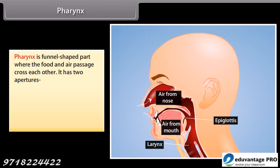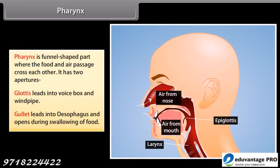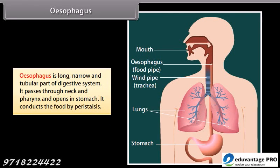The pharynx is a funnel-shaped part where the food and air passages cross each other. It has two apertures: the glottis, which leads into the voice box and windpipe, and the gullet, which leads into the esophagus and opens during swallowing of food. The esophagus is a long, narrow, tubular part of the digestive system that passes through the neck and thorax and opens into the stomach. It conducts food by peristalsis.